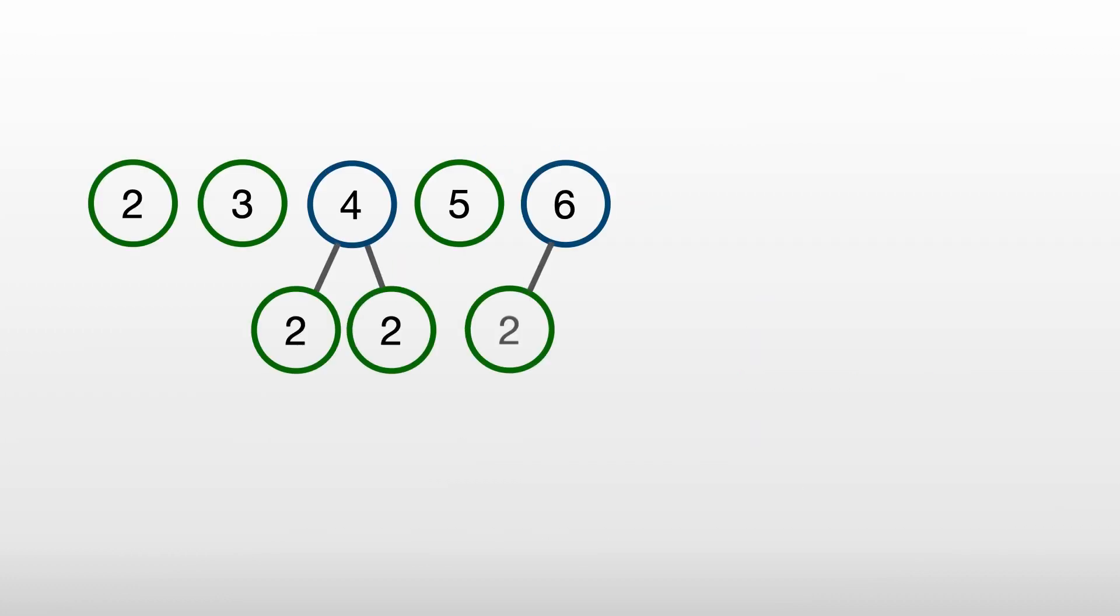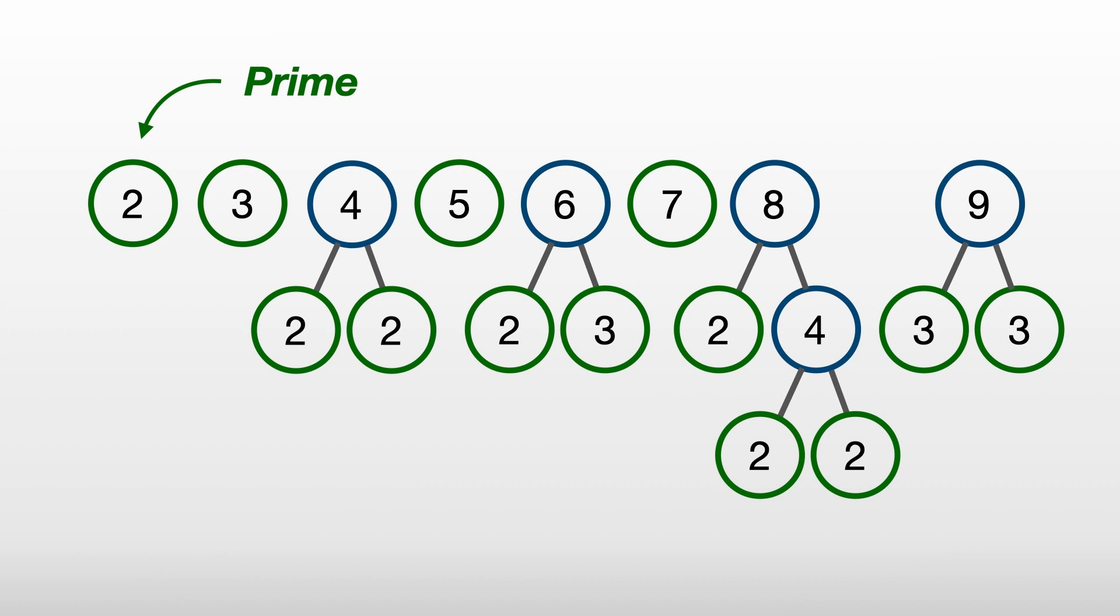And so all numbers are either prime or composite, and composite numbers can be factorized into products of prime numbers.